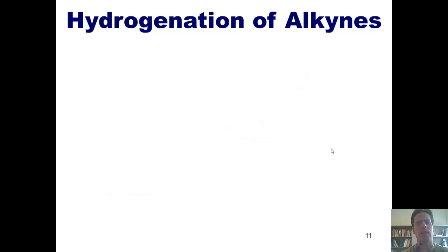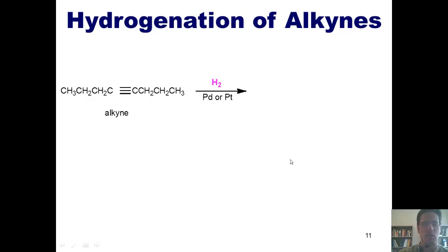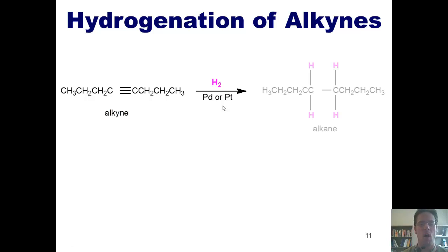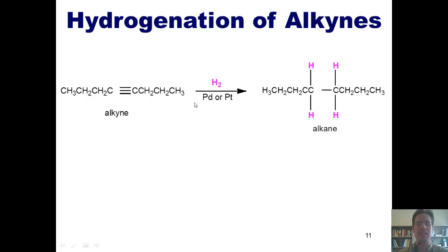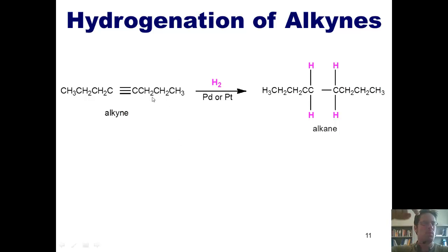What happens if you hydrogenate an alkyne? If you take an alkyne and treat it with hydrogen gas and any of the same metal catalysts, it converts the alkyne all the way to the alkane by adding two equivalents of H2 to the triple bond. In other words, under these conditions there's no way to stop at the alkene.